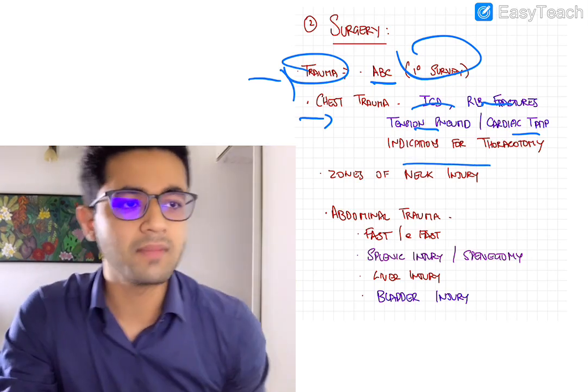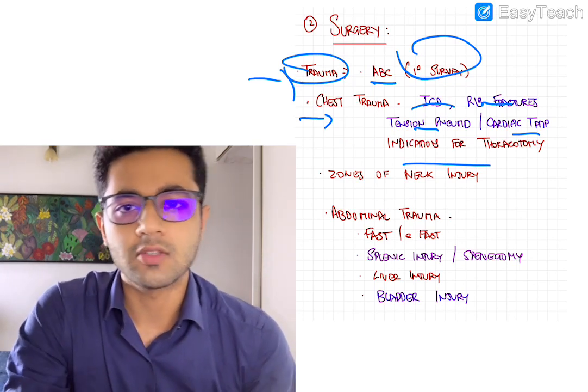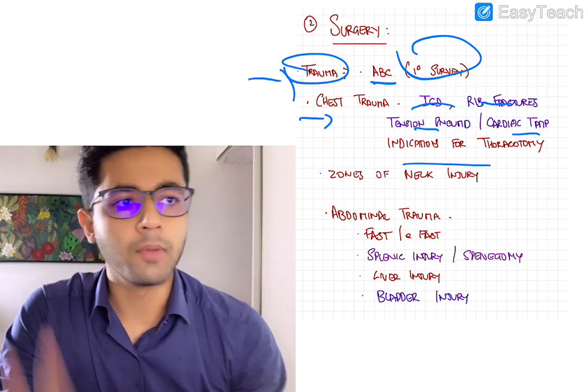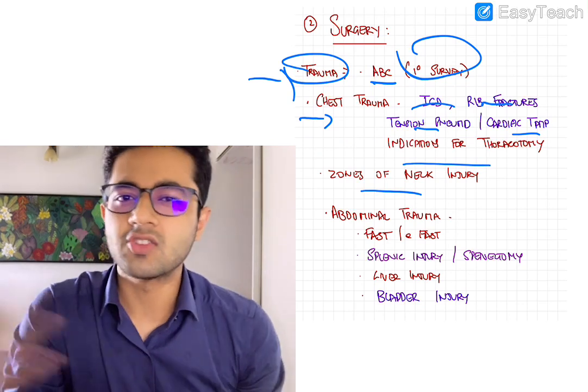Other than that, sometimes asked are the indications for thoracotomy. So when do you do a thoracotomy in case of chest trauma? So when is the CTVS isn't required? So all of this, mildly important, very important is ICD and rib fractures. Next, zones of neck injury, sometimes asked,